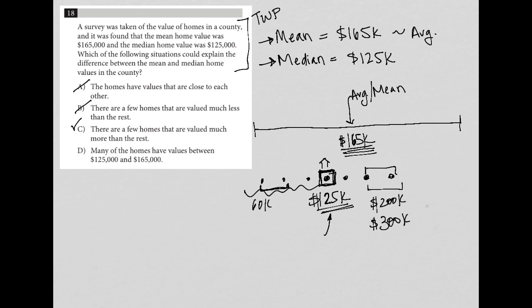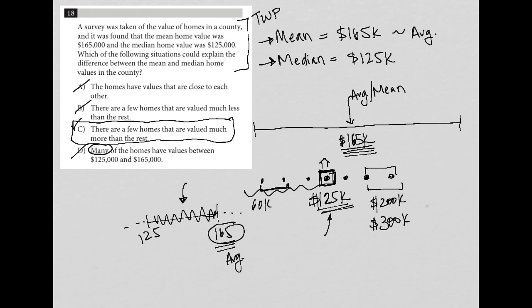And then choice D says many of the homes have values between 125 and 165. Now, if the majority or many of the homes are between 125 and 165, then that makes it very difficult for 165 to be the average, right? Because if most of our homes are in here and only have a couple of homes out there in the margins, it would make it very difficult for 165 to be the average. We would expect our average to be somewhere between those two values. So D is crossed out, making choice C the best answer in this case.